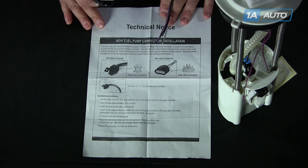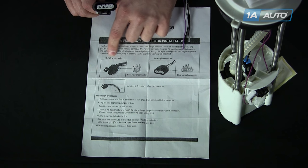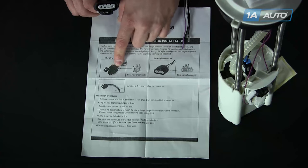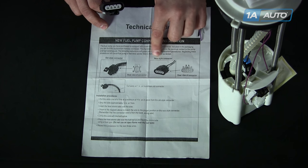Now the slight bit of confusion we have with this is on the picture here it shows the old style connector. We have the square 4-pin application, and you notice here it has the ABCD application, and right beside it has the updated newer style connector.